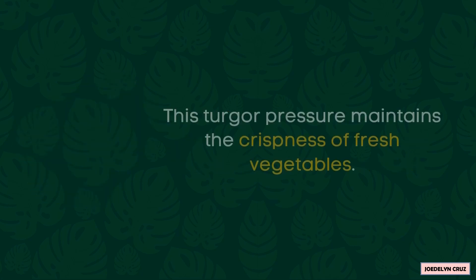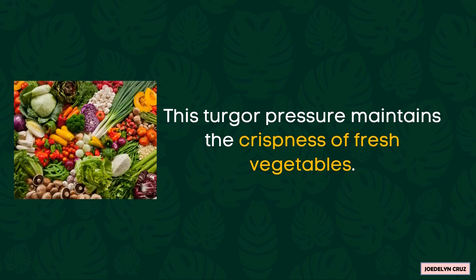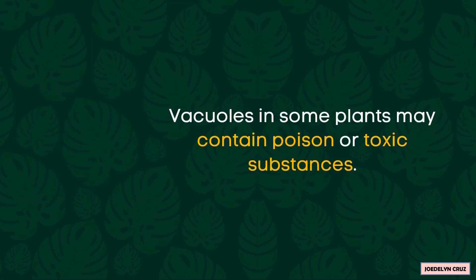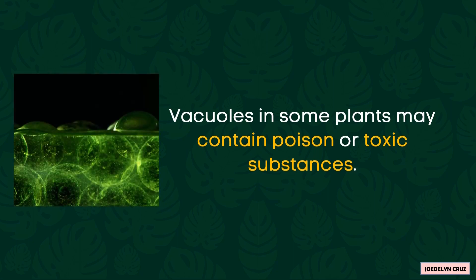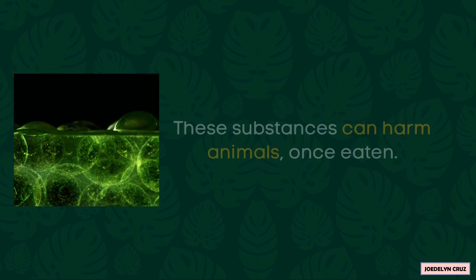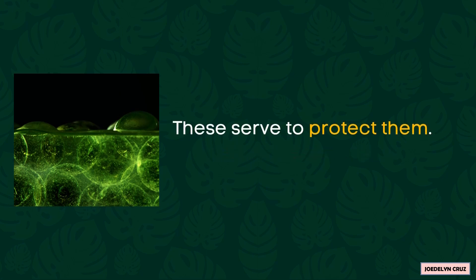This turgor pressure maintains the crispiness of fresh vegetables. In addition, vacuoles in some plants may contain poison or toxic substances. These substances can harm animals once eaten, so they serve to protect the plants.